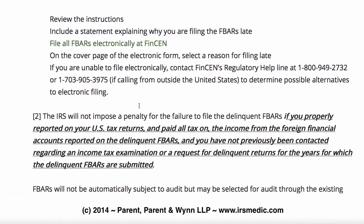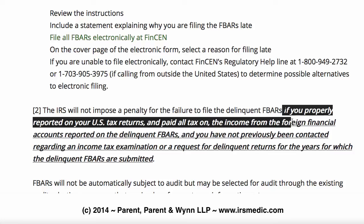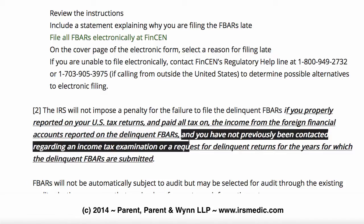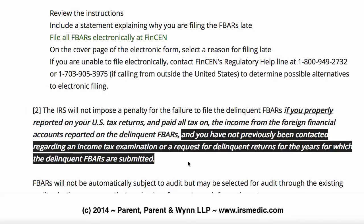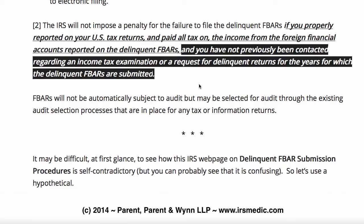But then, as we go down — and this again is from IRS.gov — it says the IRS will not impose a penalty for the failure to file delinquent FBARs if you properly reported on your U.S. returns and paid tax on the income from the foreign financial accounts reported on the delinquent FBARs, and you have not previously been contacted regarding an income tax examination. So here's the issue: if you file streamlined, you don't have any amended returns, but you do have six years of FBARs.